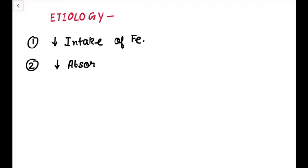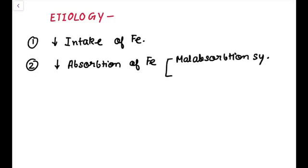Now we will see the etiology of anemia. First, decrease in the intake of iron. Second, decrease in the absorption of iron. As we know, iron absorption may decrease in malabsorption syndrome and diarrhea.